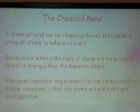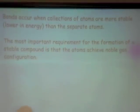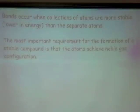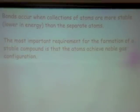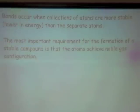The most important requirement for the formation of a stable compound is that all the atoms involved achieve a noble gas configuration — that is, 8 electrons in their valence shell. If you'd like to talk to a quantum physicist about why 8 valence electrons is stable, please do. But it's all about energy — that is the lowest possible energy state, when the valence shell is full and stable.